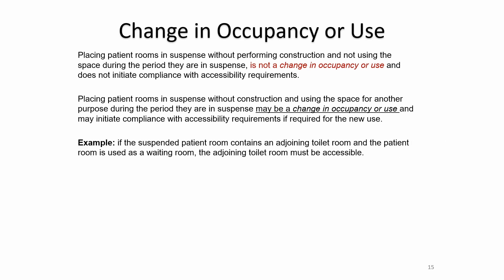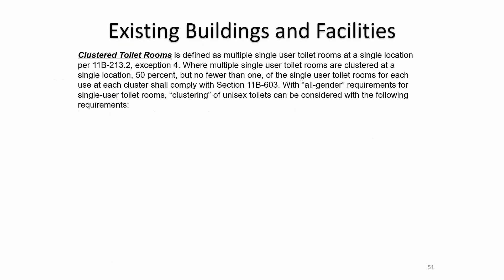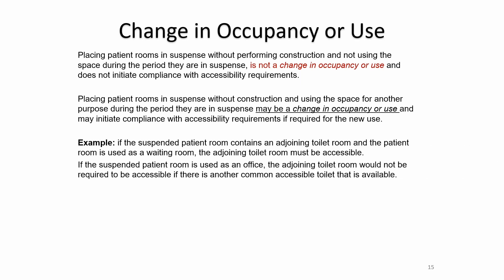An example: if the suspended patient room contains an adjoining toilet room and the patient room is used as a waiting room — waiting rooms are required to have toilet rooms — the adjoining toilet room must be accessible. However, if the suspended patient room is used as an office, the adjoining toilet room would not be required to be accessible, because code does not require toilet rooms specifically to serve an office.